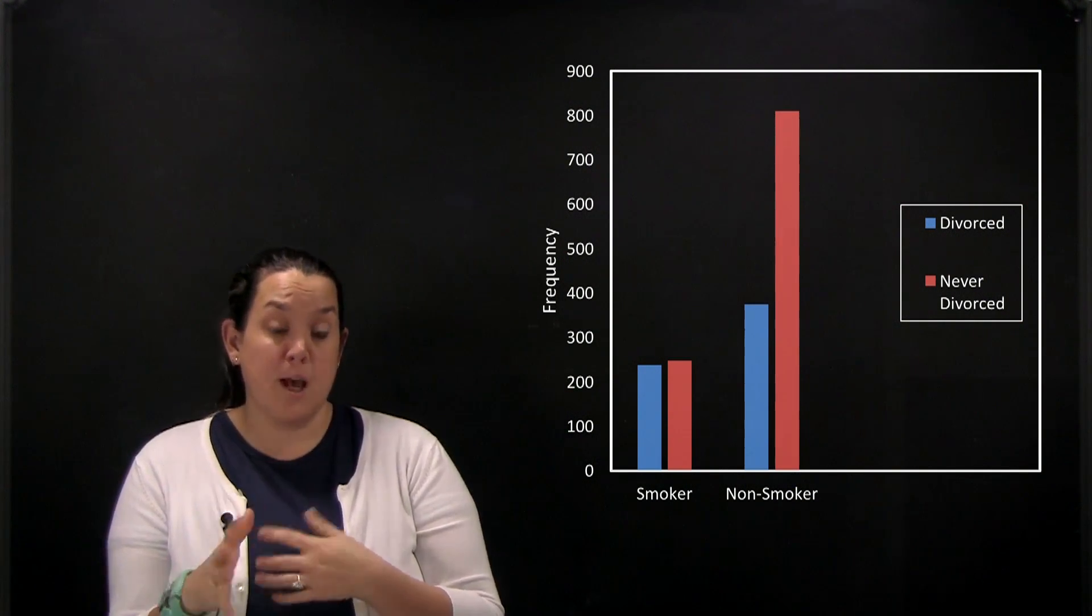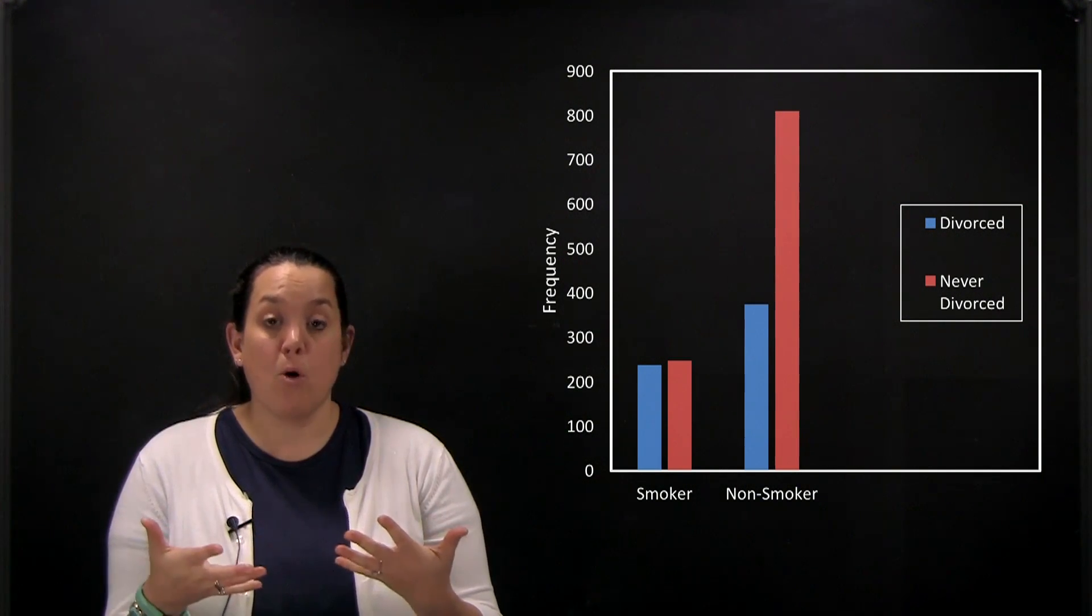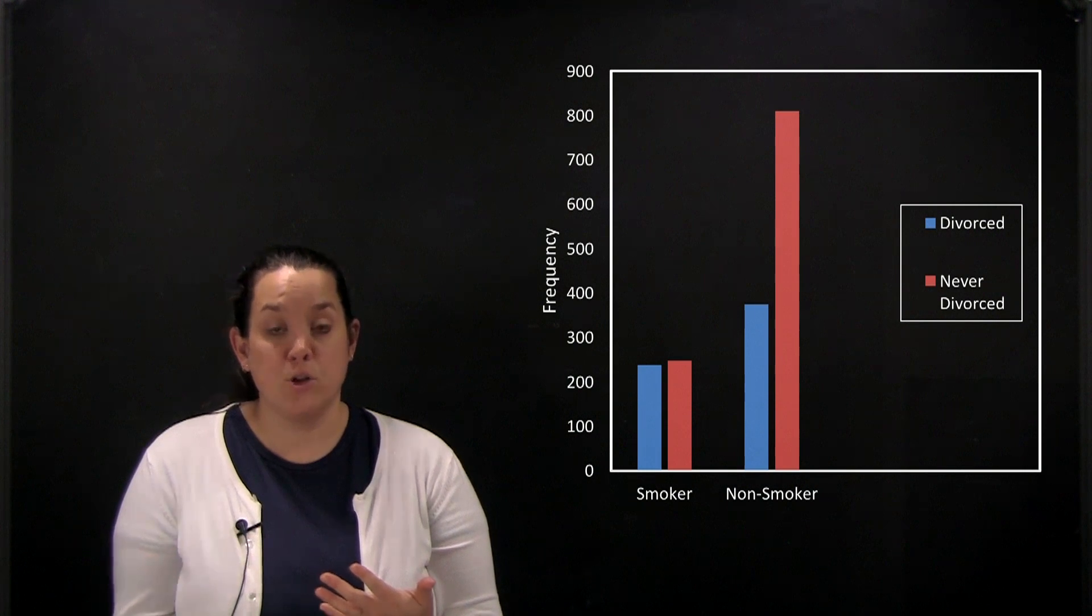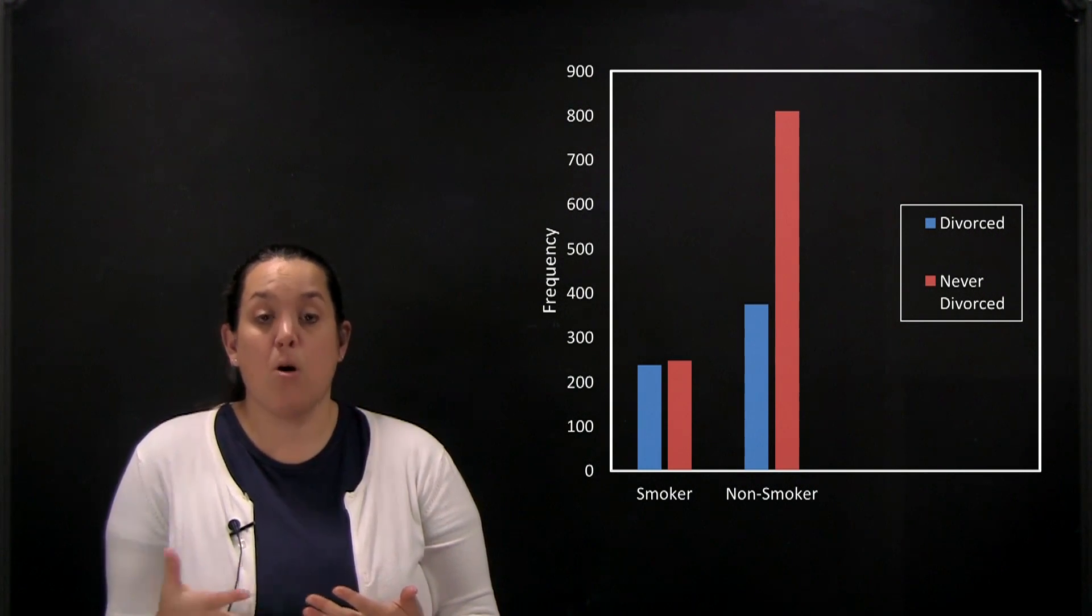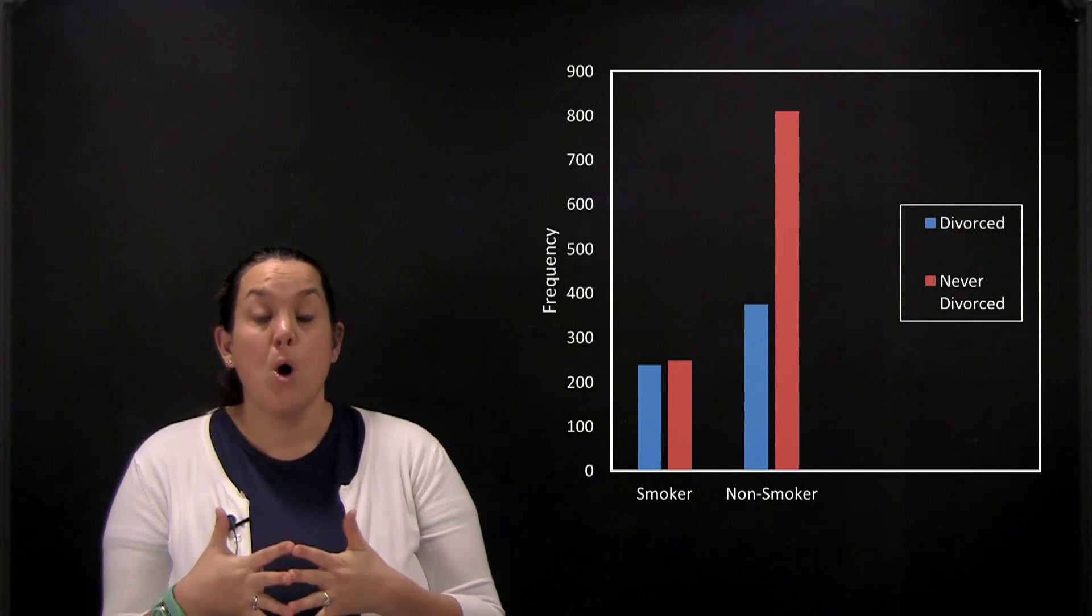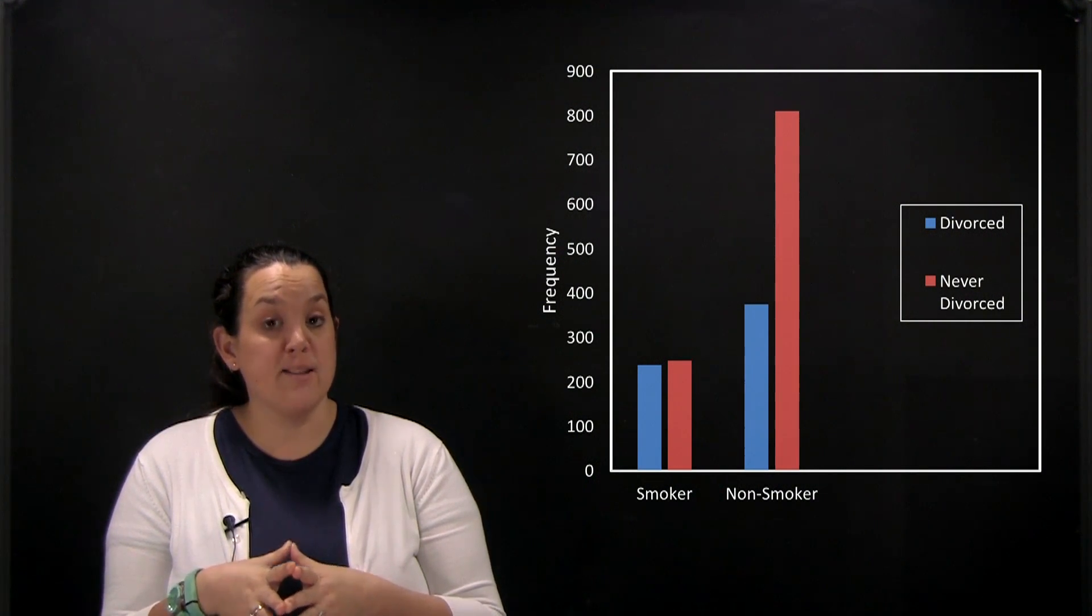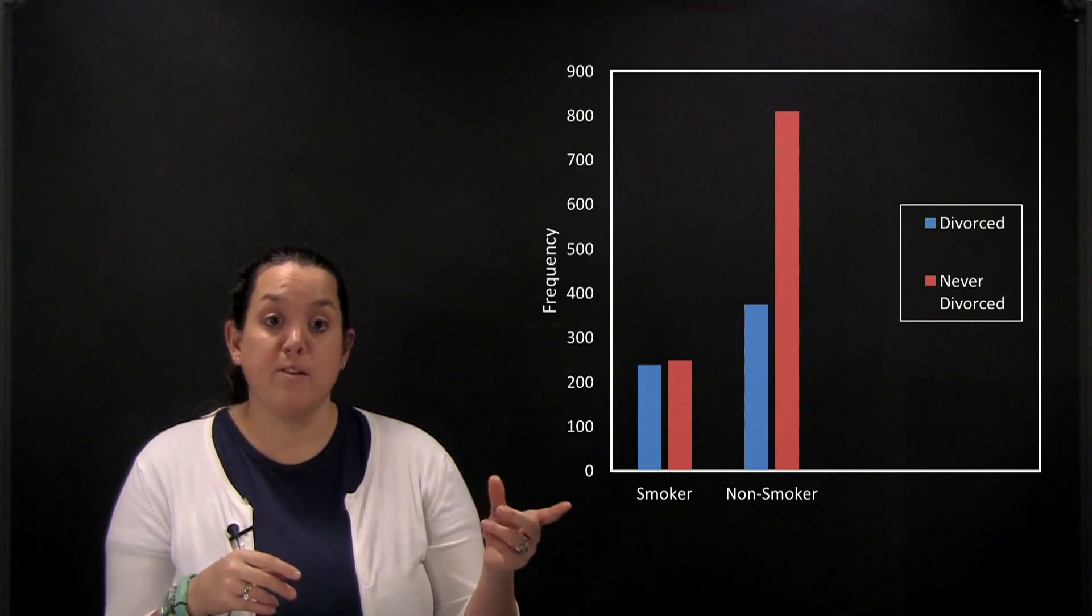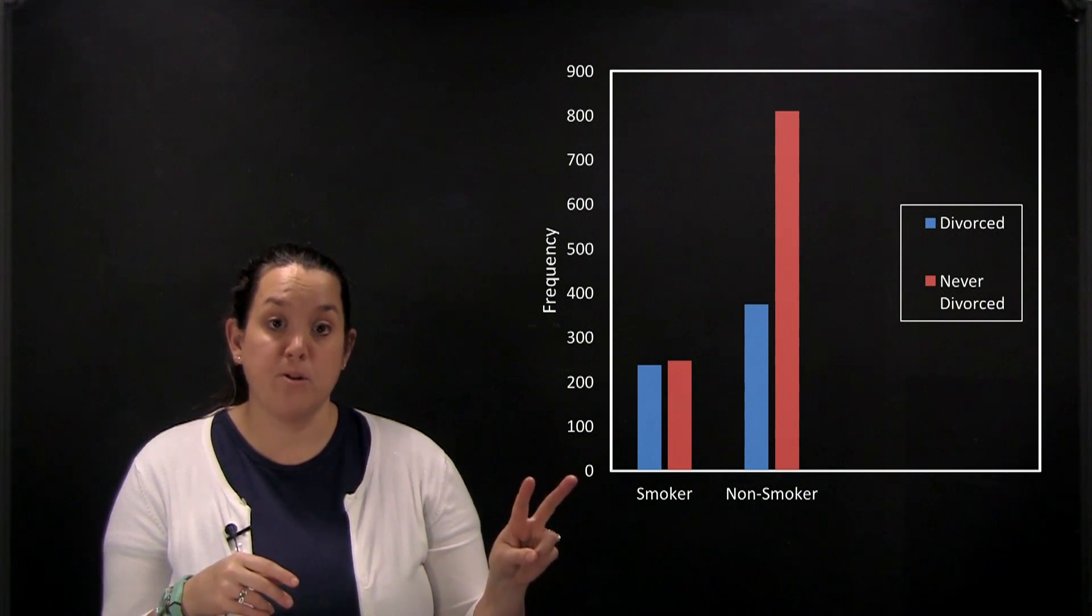We've looked at bar graphs before, but the bar graph that we have seen in the past or in Chapter 2 was just a single bar graph based on one variable. Right now, because we're talking about the analysis of two categorical variables, our bar graph is going to be based on two variables.